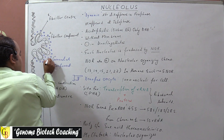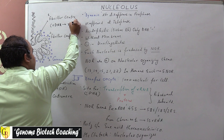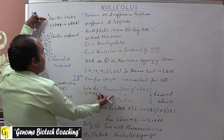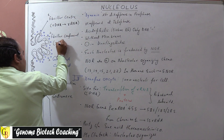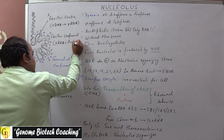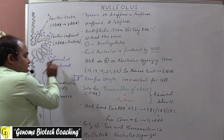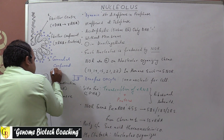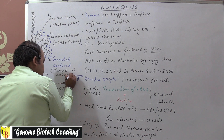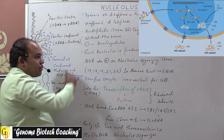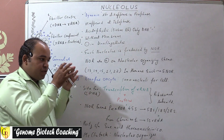The nucleolus can be categorized into three parts: fibrillar center, fibrillar component, and granular component. The fibrillar center contains rDNA and leads to the biosynthesis of rRNA through transcription. The fibrillar component reorganizes rRNA with proteins and leads to the biosynthesis of ribosomes. The granular component contains mature ribosomal subunits, which are then transported out of the nucleus.